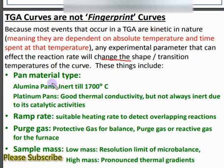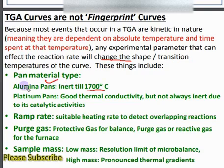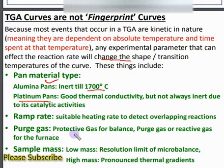The first parameter is the material type — the pan. Alumina pans are inert up to 1700°C. Platinum pans are thermally good conductors, but they are not as inert as alumina and can show catalytic behavior. Similarly, the ramp rate also influences the TGA curves — a suitable heating rate is needed to detect overlapping reactions. Purge gas or reactive gas also influences the balance and sample.